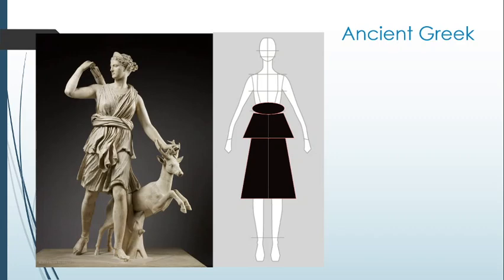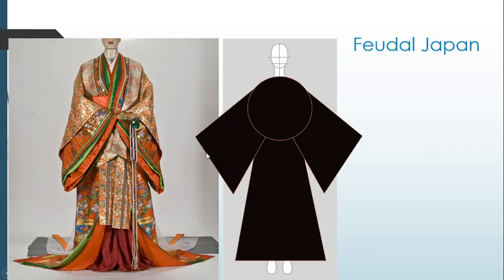Let's take a look at some basic shapes and silhouettes throughout cultures and history. Here we can see an ancient Greek toga — this is actually Artemis the Huntress — with a silhouette focused on tiering out the bottom and padding out the waist. I want to focus not only on the silhouettes but the basic shapes creating them, because we can use basic shapes to help balance and create silhouettes. Here we have a feudal Japanese kimono with a very large, imposing silhouette.